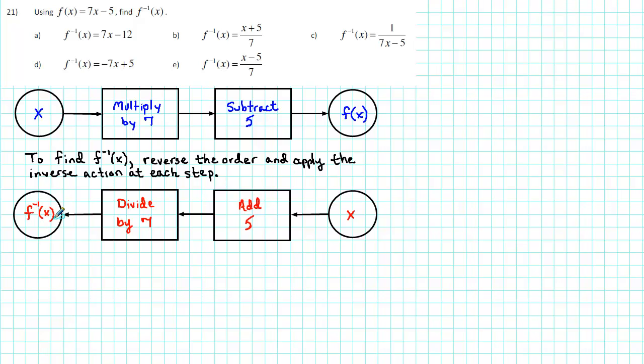To find a formula for f inverse of x, we just need to apply the process. Start off with x and add 5.